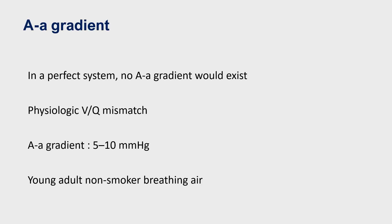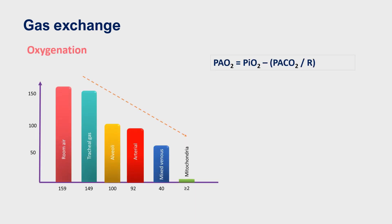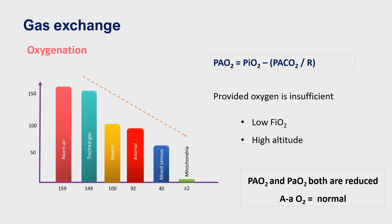In a perfect system, no alveolar-arterial gradient would exist, as we assume that all the oxygen entering the alveoli will diffuse into the arterial system. However, owing to physiological VQ mismatches, there is usually a gradient of 5–10 mmHg in a young adult non-smoker breathing air. Hypoxia may occur due to a defect in oxygenation where the inspired oxygen concentration is insufficient, such as low FiO2 and high altitude. Here, both alveolar and arterial partial pressures of oxygen are reduced, so the alveolar-arterial gradient remains normal.